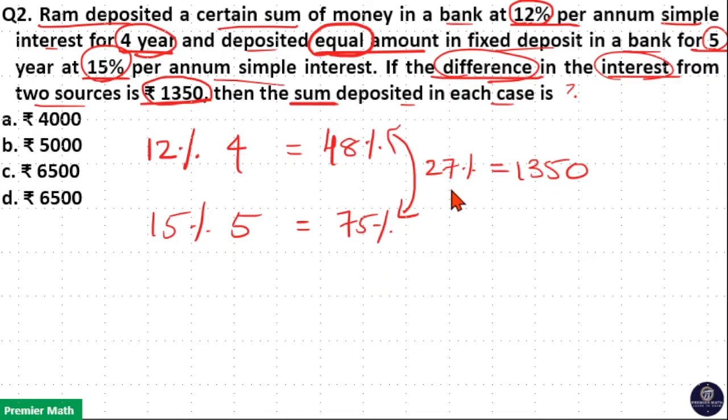Now, 27 goes 5 times into 135. So 1% is ₹50. Then 100%, which is the principal sum, equals 50 × 100 = ₹5000.